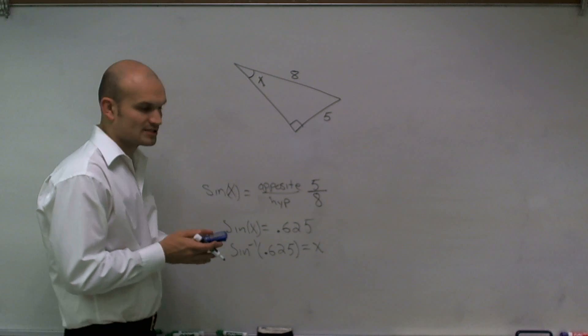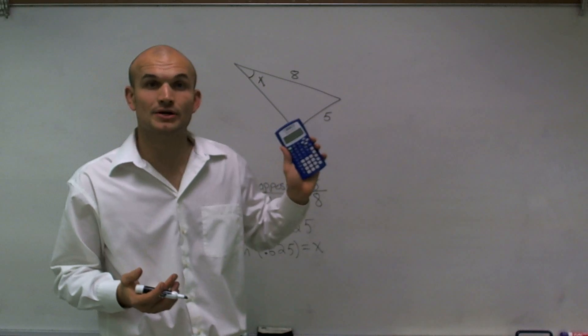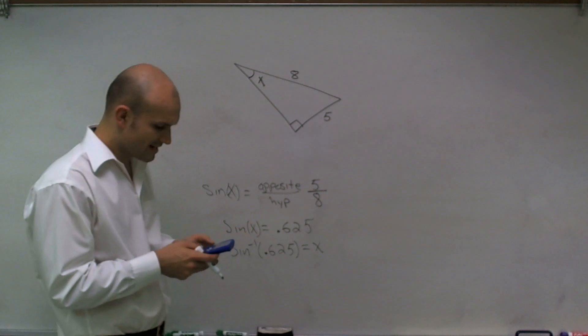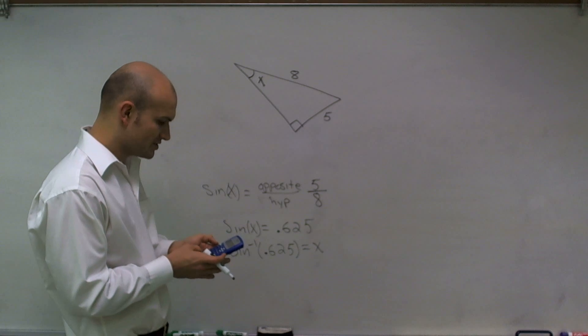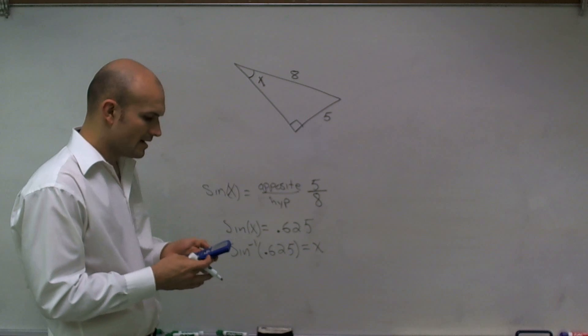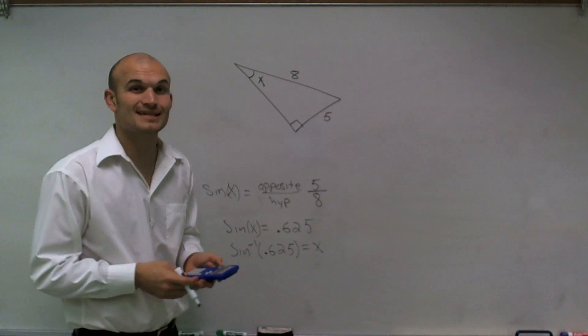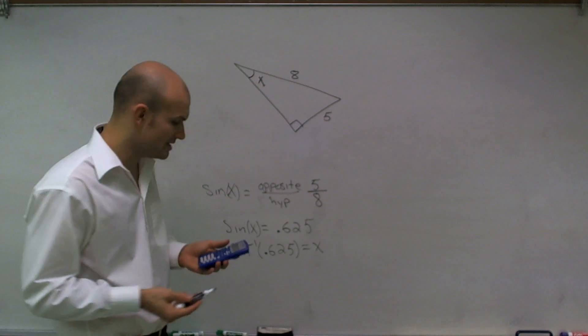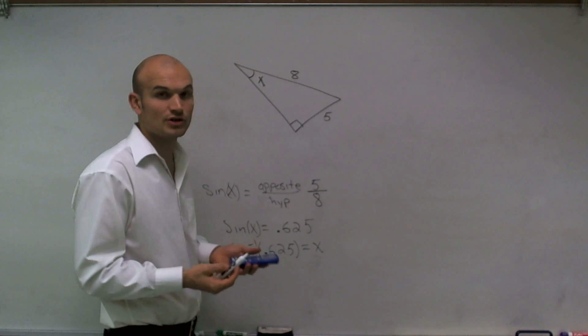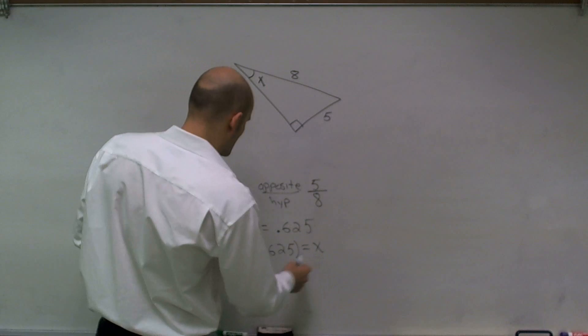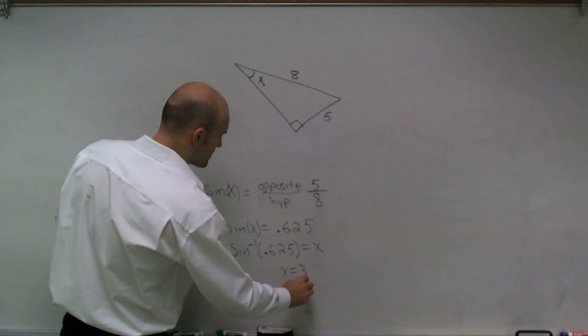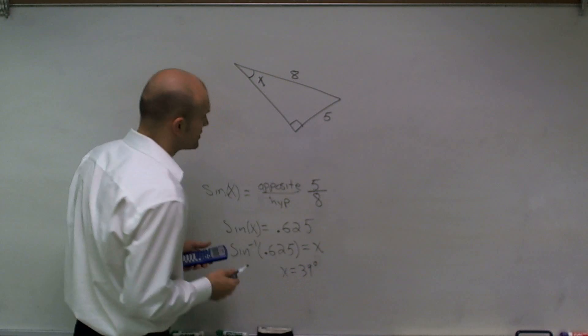So what I'll do is I'll take a graphing or a scientific calculator, make sure it's in degree mode. And what I'll do is I'll take inverse sine of 0.625. And what I get is 38.6. And I believe I want to round it to the nearest degree. So 38.6 is going to round to 39 degrees. Therefore, I can just simply say x equals 39 degrees.